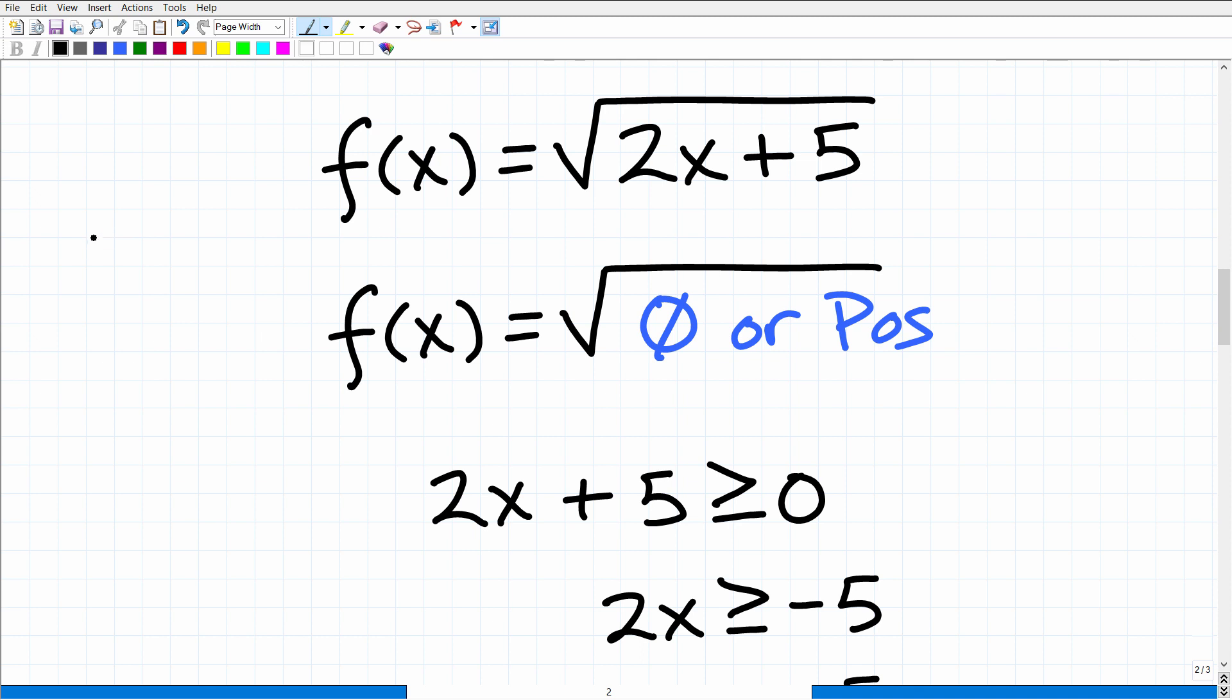Well, when we're talking about the set of real numbers, okay, this is of course the real number line. Here's zero. Here's all of our positive numbers. Here's all our negative numbers.